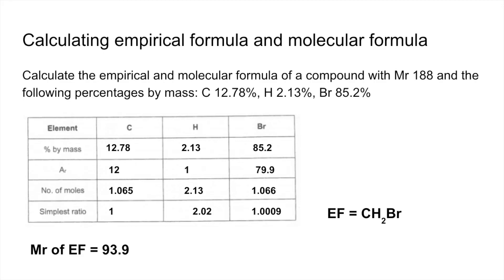We're now going to find out how many times that goes into the MR of the whole molecule. So we take the MR of the molecule and divide that by the MR of the empirical formula.